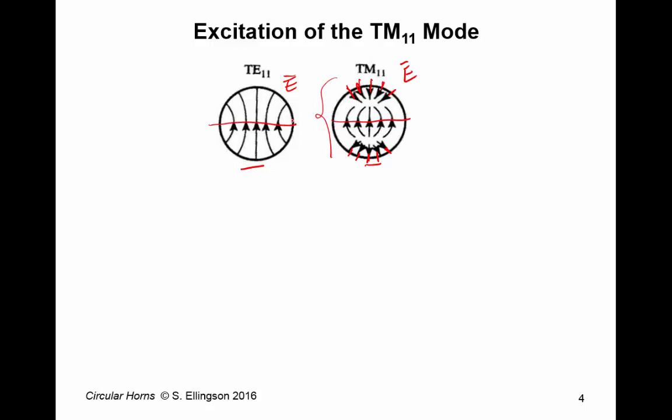For example, the field lines curve like this in the TE-1-1 mode, and they curve like this in the TM-1-1 mode. And then there are other differences as well.